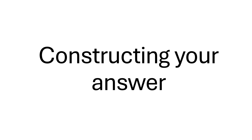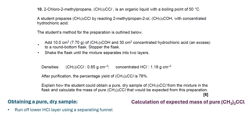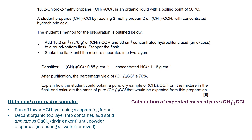Having thought through that, let's see how we can construct the answer. The answer has to be built up in two strands: one to obtain a pure dry sample, and the other to calculate the expected mass of (CH₃)₃CCl. For the pure dry sample, the first thing to do is run off the lower HCl layer using a separating funnel. Then decant the organic top layer into a container and add solid anhydrous CaCl₂ as a drying agent until the powder disperses, indicating all the water is gone. You could also use other anhydrous Group 2 salts such as MgSO₄. Finally, distill and collect the purified product at 50°C.